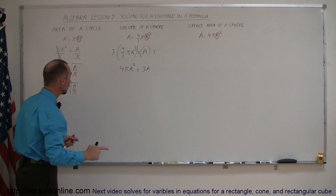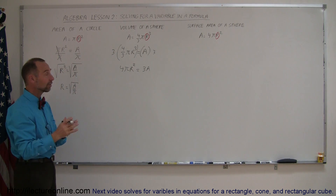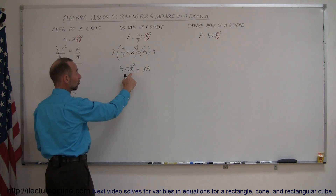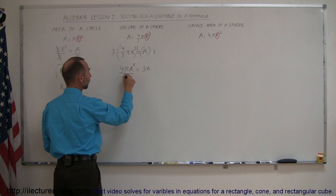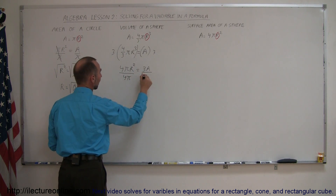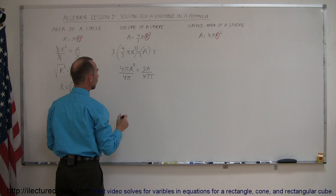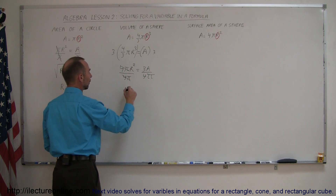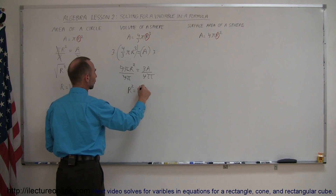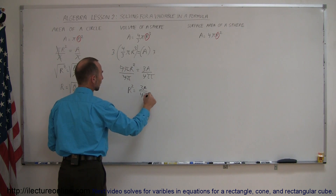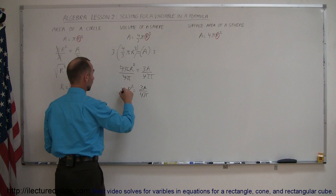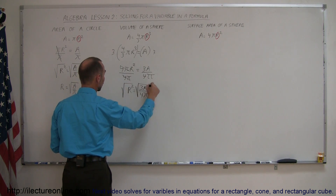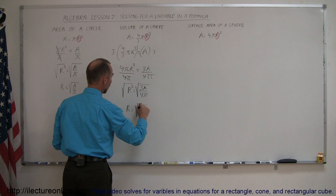Now we divide both sides of the equation by the coefficient of the variable we're looking for, which is r. The coefficient in this case is 4 pi, so divide both sides by 4 pi. The 4 pi's cancel out, leaving r cubed equals 3A divided by 4 pi. Then we take the square root of both sides, giving us r is equal to the square root of 3A divided by 4 pi.